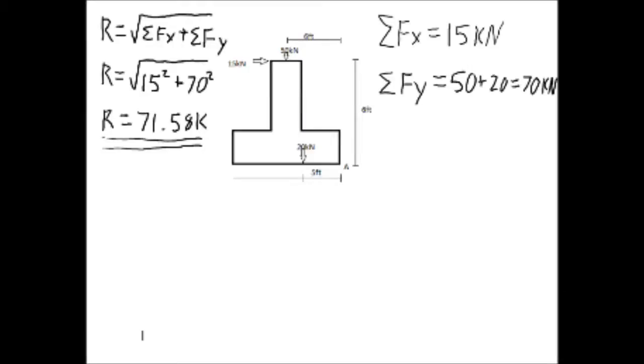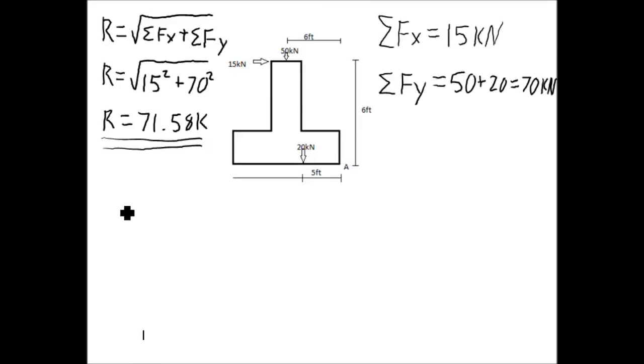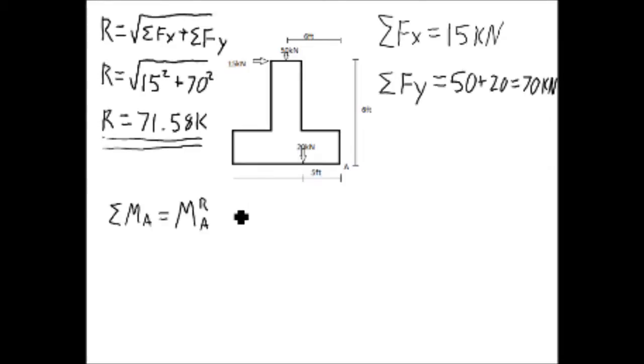Now that we have found the resultant, let's calculate its location. To find its location, we must take the moments of all forces in the problem. Moment is equal to force times distance and tends to cause rotation. Generally, clockwise moment is positive while counterclockwise moment is negative. All forces in this problem are positive forces. The formula we use to find moment is Varignon's Theorem. Varignon's Theorem states that the moment of force is equal to the moment of all x forces plus the moment of all y forces.